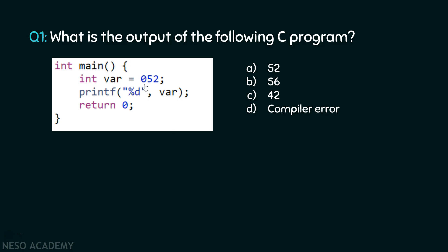If you simply ignore this zero in front of this value, then you might think the answer is 52. We are simply assigning 52 to this variable and we are printing it, and the answer is 52 — wrong! The answer is not 52. There is obviously a meaning behind it. Why are we placing zero in front of this value? Let's try to understand that meaning.